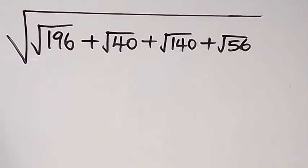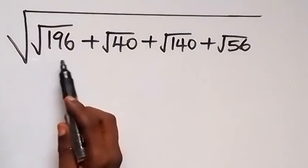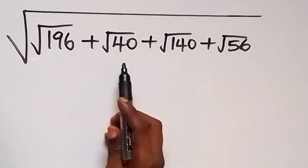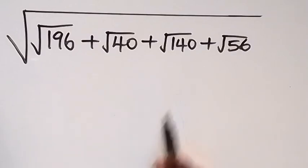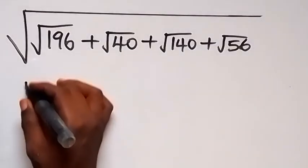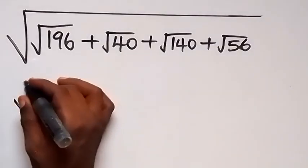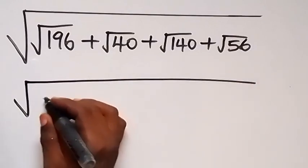Hello, you are welcome. How to simplify this problem: square root of root 14 plus root 40 plus root 140 plus root 56. From here we can rewrite this, and this will become square root of we have root 14.